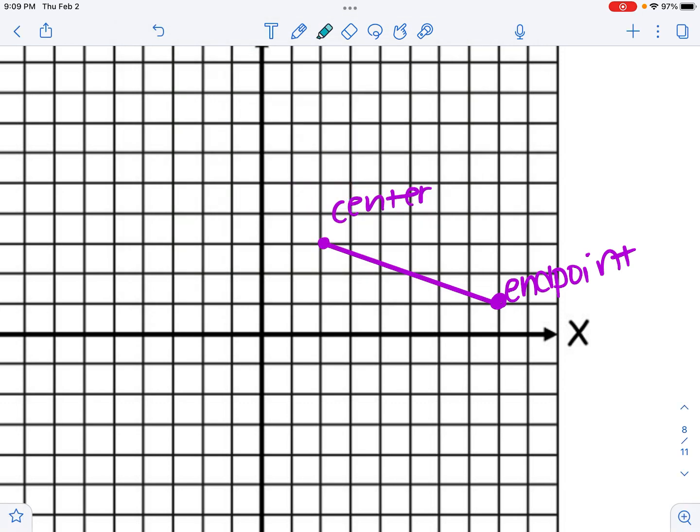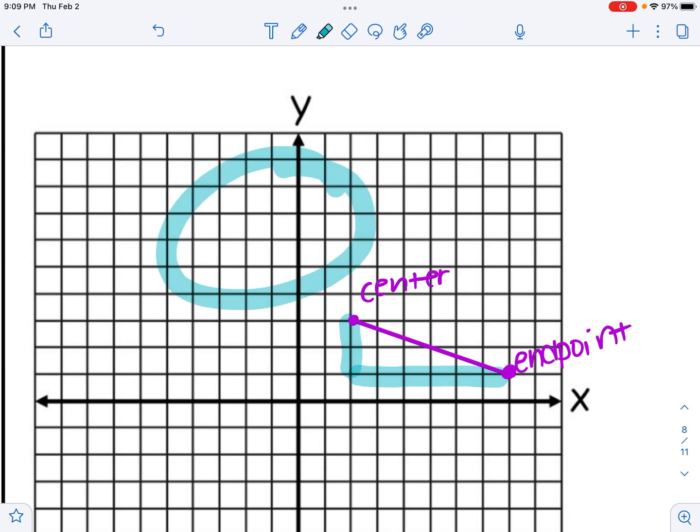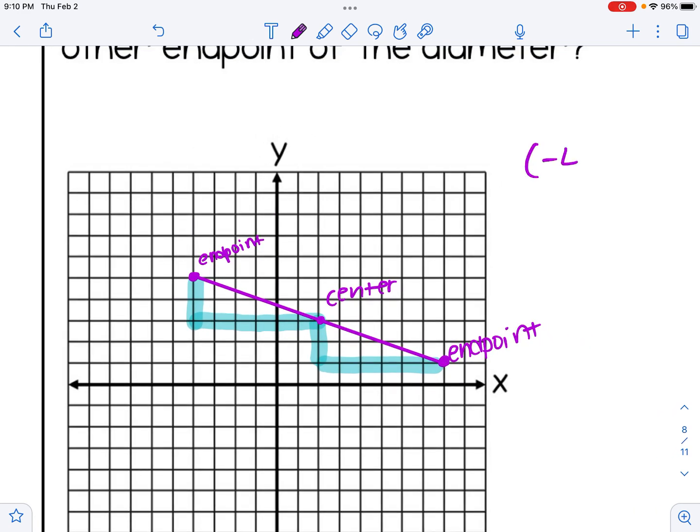So I'm going to create these little slope triangles. I can see that from the center to the endpoint, we are going down 2, and then we were going over, in this case, 6. So I know where my other endpoint should be. I know it should be somewhere in this vicinity. So I'm going to repeat that slope triangle by going over 6, up 2, and wherever I land, that's my other endpoint. So in this problem, that gives me the coordinates of (-4, 5).